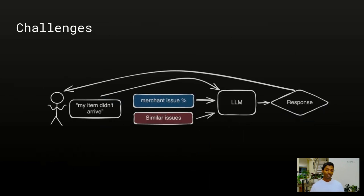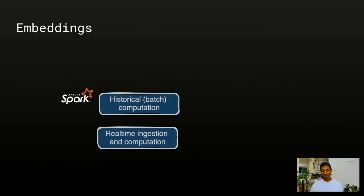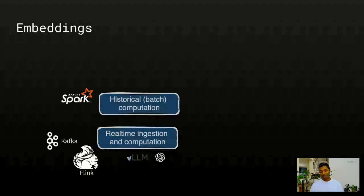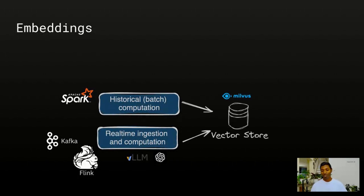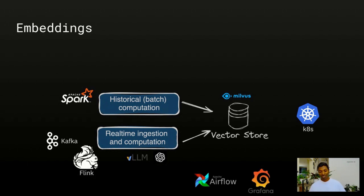Another example is finding similar issues to the current issue — a retrieval problem. To find similar issues we need to look at all issues from all users, find the most relevant ones, and pass them to the LLM. This follows a similar story, but the biggest difference is that now we're generating embeddings — calling out to something like vLLM if you deploy your own model, or to a vendor like OpenAI. Finally you need to store those in a vector store, and again a service that pulls this information and supplies it to the ML service or prompt, with Airflow and Grafana for orchestration and monitoring.